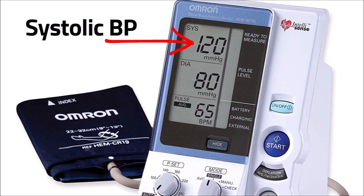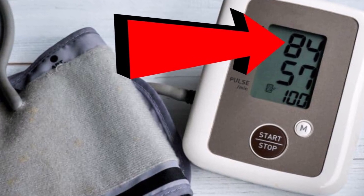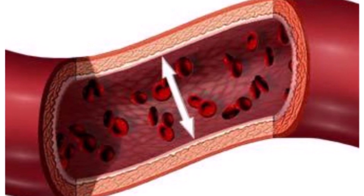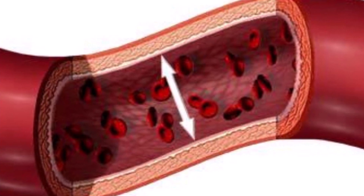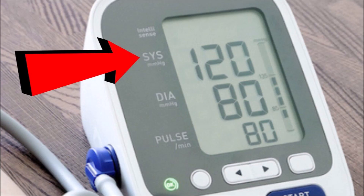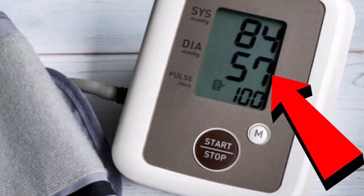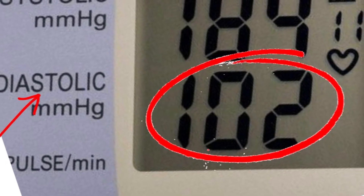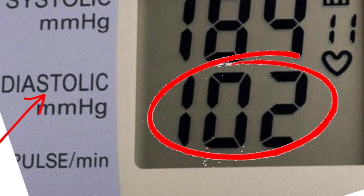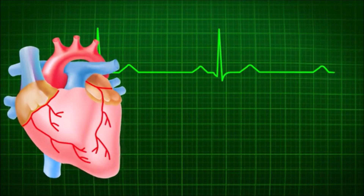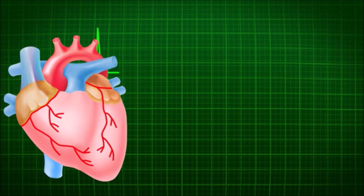I'll start with systolic blood pressure. It's the top number of your blood pressure reading — the pressure your blood is exerting against your artery walls every time your heart beats. Diastolic pressure is the lower number of your reading, and it indicates how much pressure your blood exerts against your artery walls every time your heart is resting between beats.